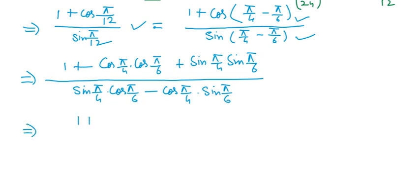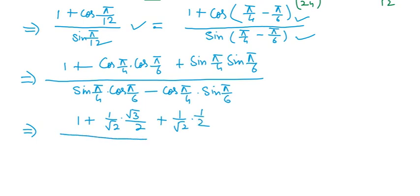Put these values: 1 + cos(π/4) means cos45° = 1/√2, and cos(π/6) means cos30° = √3/2. In the denominator we have sin(π/4) = 1/√2 and cos(π/6) = √3/2, and sin(π/6) = 1/2. Then we simplify these steps.